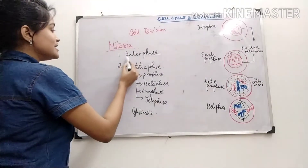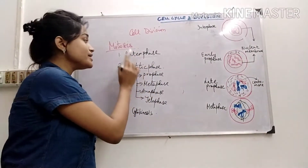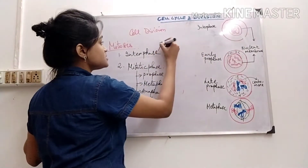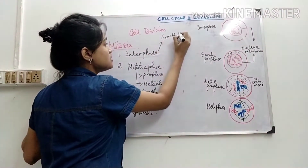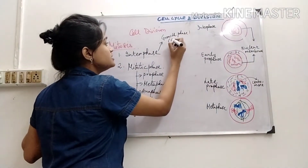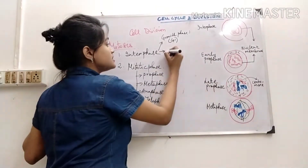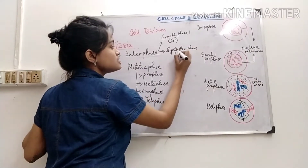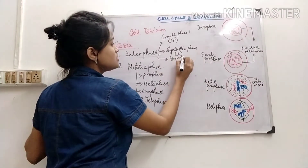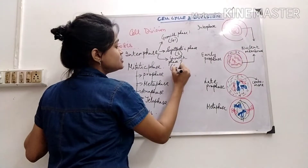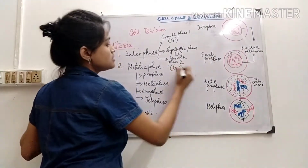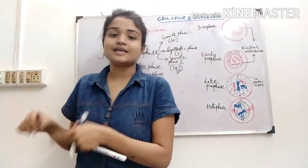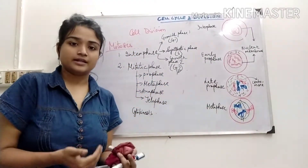Interphase is actually not the resting phase. Metabolic activities go on in this phase, and it can be divided into three parts: Growth phase one (G1 phase), synthetic phase (S phase), and Growth phase two (G2 phase). There is also a G0 stage, where the cell exits from cell division, temporarily or permanently depending on the case.